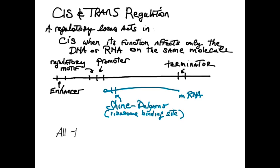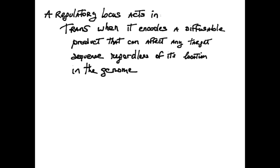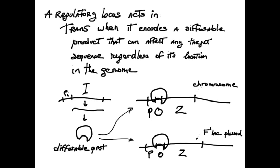A regulatory locus acts in trans when it encodes a diffusable product that can affect any target sequence, regardless of its location in the genome. For example, the lac I locus encodes a diffusable product, the repressor protein, that can bind and shut down the cognate operator sites anywhere. Note that an RNA can also diffuse and act in trans.